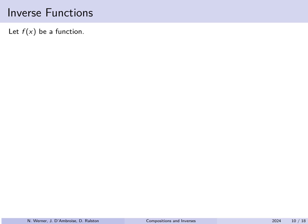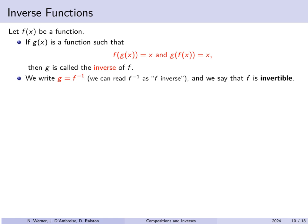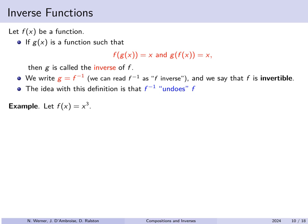Now let's talk about inverse functions. Suppose f(x) is a function. If g is a function such that f(g(x)) equals x and also g(f(x)) equals x, then f and g are called inverses of one another. For example, if f(x) is x cubed, then the inverse function is the cube root of x — if you want to undo cubing, you take a cube root.